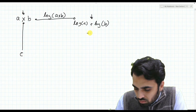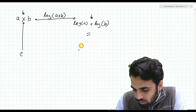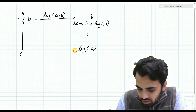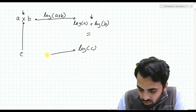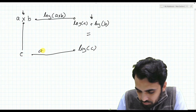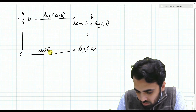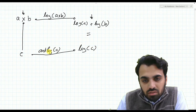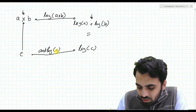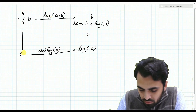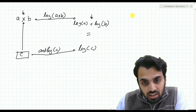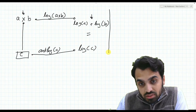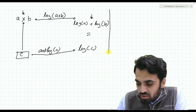We can equate this to log of c, and eventually we would have to take the antilog, which would be dependent on the base of this log. Taking the antilog of c we eventually reach the result c. Similarly, in the present context, suppose we have a linear time-invariant system.